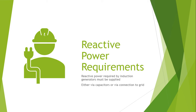An induction generator requires reactive volt-amperes from the supply mains for the excitation process. Once it is excited, the problem goes away and we do not need that method anymore. In newly developed machines, the self-excited induction generator is proposed and it can be used to operate wind turbines at variable speed. An induction machine is connected to a three-phase capacitor.